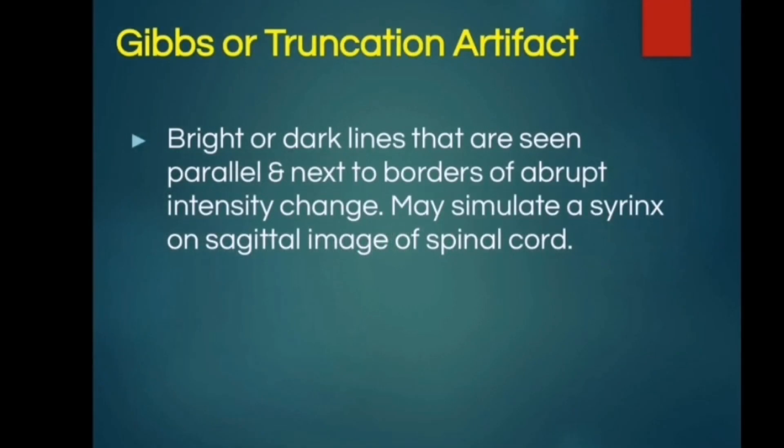Gibbs or truncation artifacts are bright or dark lines seen parallel and adjacent to borders of abrupt intensity change. They may simulate a syrinx on a sagittal image of the spinal cord.